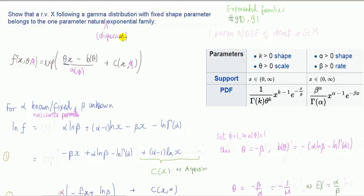For people doing regression analysis and GLMs, they're more interested in adding an extra parameter called the dispersion parameter, which we're calling phi here. You've got this function a of phi, and some sources differentiate that from the usual exponential family by calling it a dispersion exponential family to account for this extra dispersion parameter. So I'm going to do it two ways: first show it belongs to the one-parameter natural exponential family, then show it also belongs to the one-parameter natural dispersion exponential family.